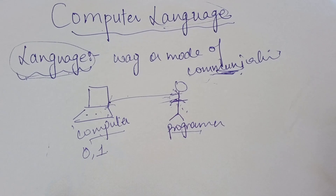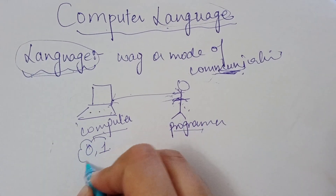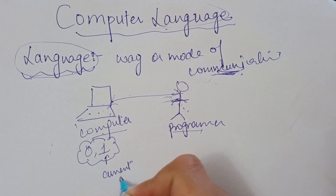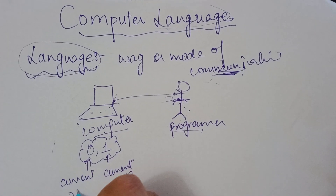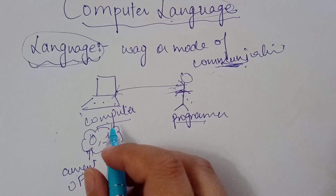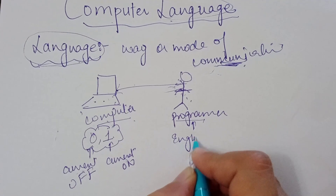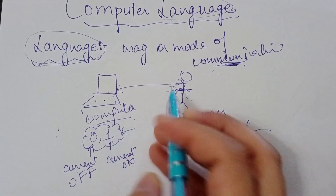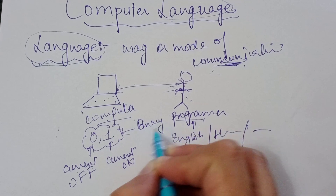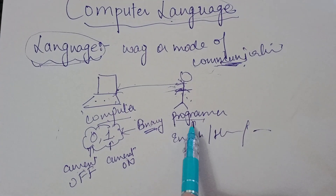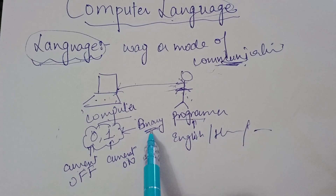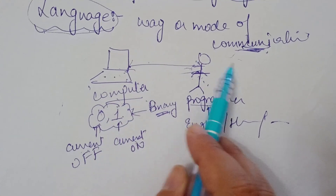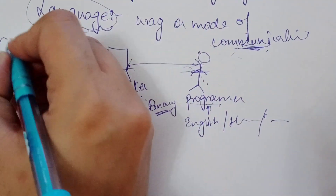We want to talk to the computer, so we need to understand what a computer is — it is an electronic machine and it understands zero and one. One means current on, zero means current is off. The chip stores zeros and ones, and the programmer knows English, Hindi, Punjabi, French, or any language. So there are two options: one method is the programmer should learn binary language, and the other method is the programmer can write in their own language and the computer can understand it. The very first scenario is machine language.